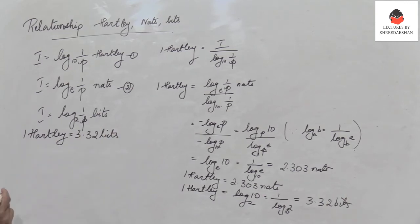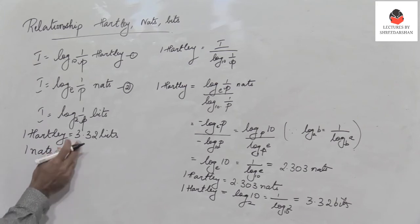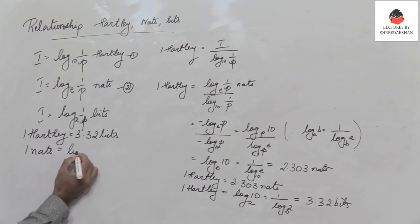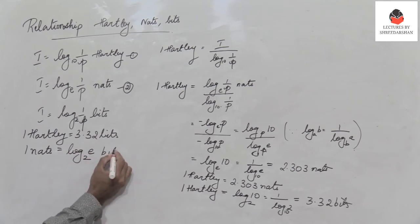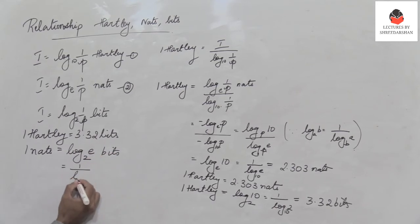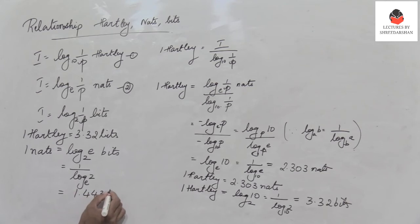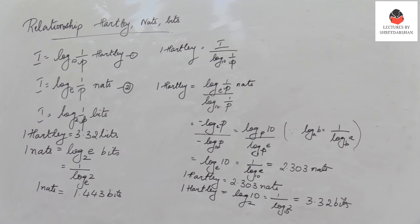Now let's find the relation between Nats and bits. 1 Nat equals log e to base 2, because we need it in bits. This equals 1 divided by log 2 to base e, giving a value of 1.443 bits. So 1 Nat equals 1.443 bits.